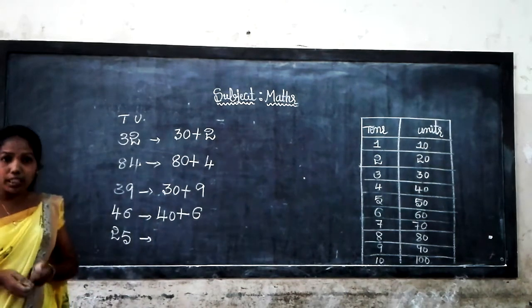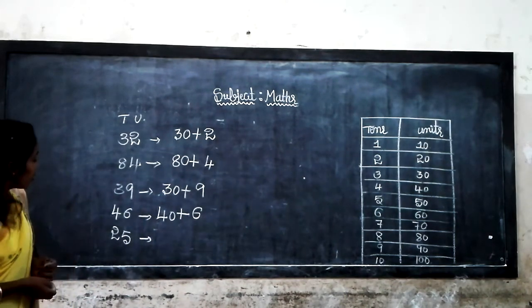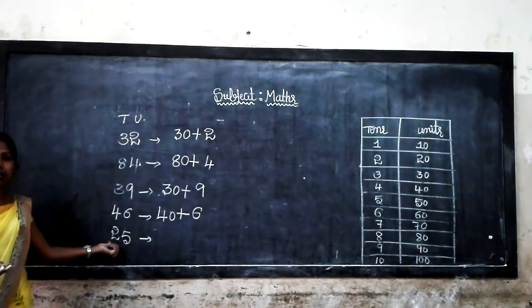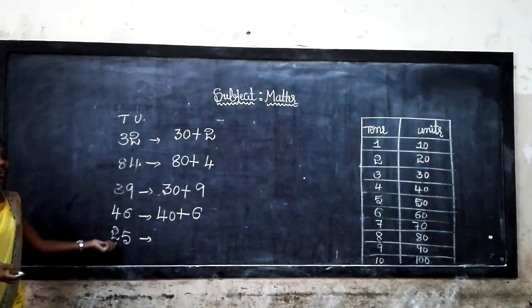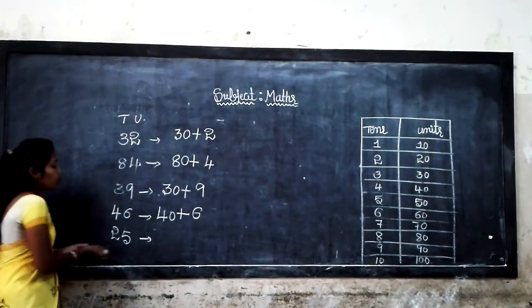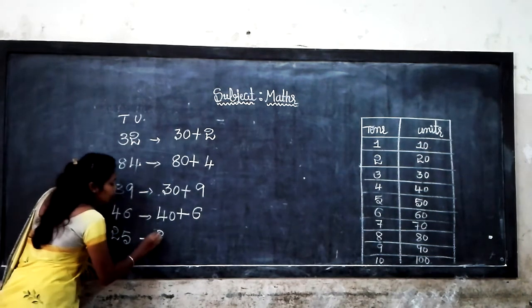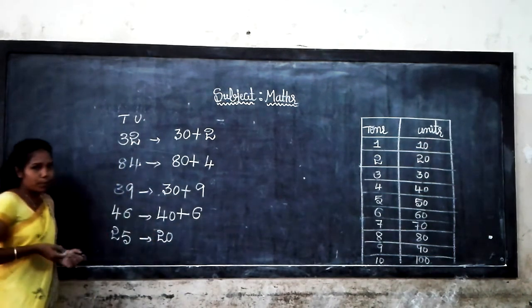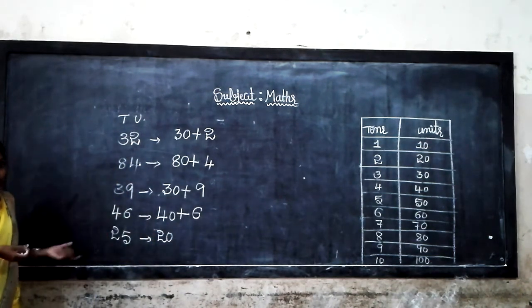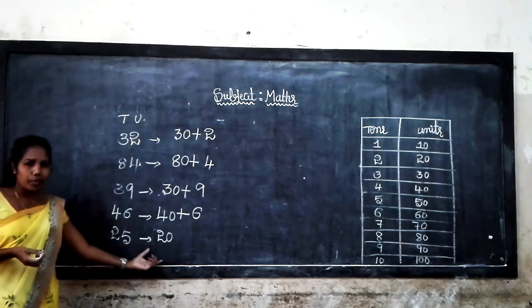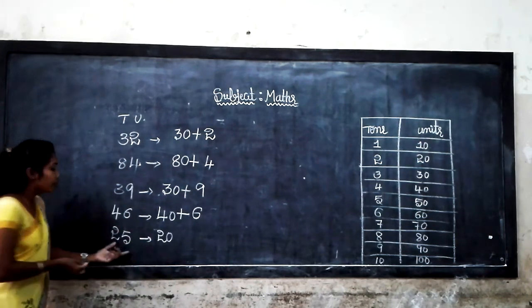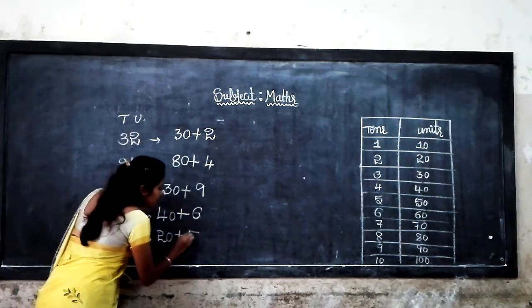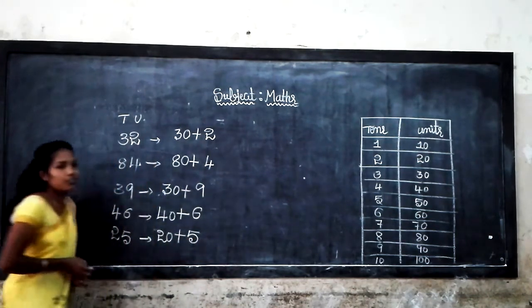The place value of 25: 2 tens is equal to 20, because 2 is in the tens place. 2 tens is 20, then how many units? 5 units.